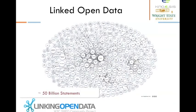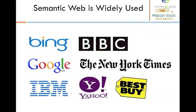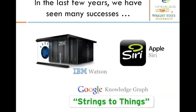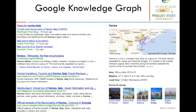These technologies are widely used in various industry settings with many successes in recent years. For example, IBM Watson uses semantic web technologies as one of its supporting technologies. Google introduced Knowledge Graph, where nodes are things in the real world and edges are the relationships between them. Here is an example of the Google Knowledge Graph: searching for Venice, Italy identifies it as a place and provides all associated points of interest. This was a brief introduction to semantic web and its wide use in industry.